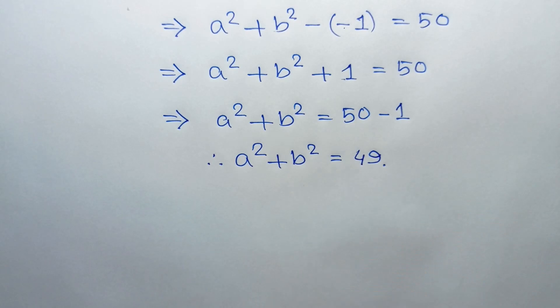So the value of A squared plus B squared is 49. If you like this video, please subscribe to my channel. Thanks for watching.